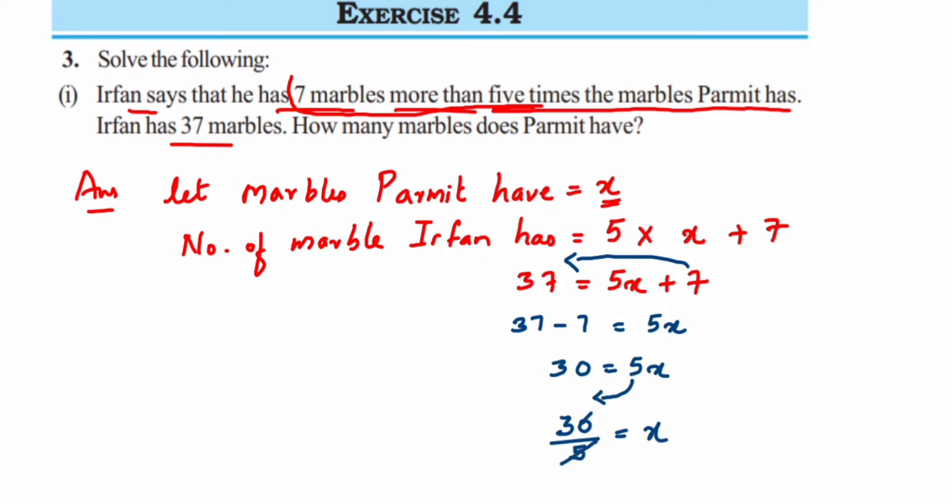Just cancel—five goes into thirty six times. From here we can say x equals 6. But we know that x is nothing but the number of marbles Parmit got. Therefore, from here we can say Parmit has 6 marbles.